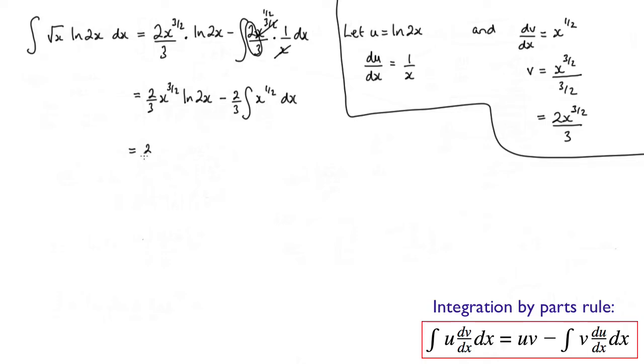So we have 2 thirds x to the 3 over 2 log 2x minus 2 thirds. Now x to the power of 1 half, when I integrate that I will get x to the power of 3 over 2 over 3 over 2, plus the constant of integration.